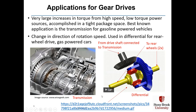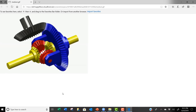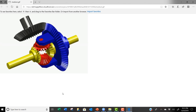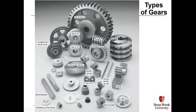We can look at a GIF file here to actually see the motion. The two yellow shafts are rotating at the same angular velocity and in the same direction. Here's a picture of all the gears that we're going to study in this book, and then some.